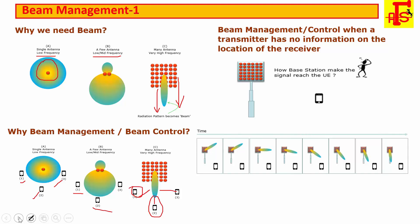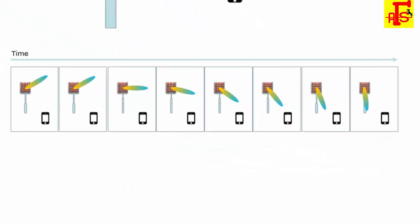One important and well-known solution is: the base station transmits a beam in a specific direction at a specific time, then changes the direction a little bit in the next time frame, until it has scanned all the area it should cover. This picture shows how the beam covers all directions and tries to synchronize with the UE. This video shows how the beam works to identify the UE if it is in a different location.